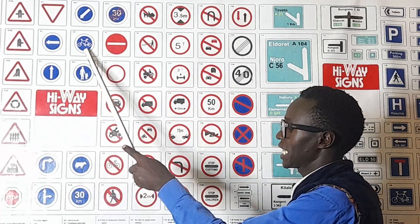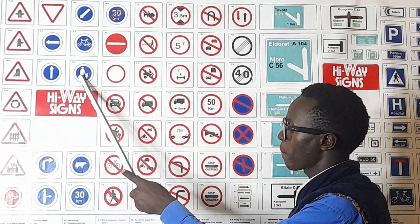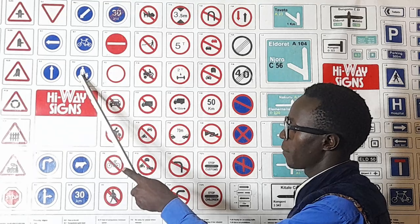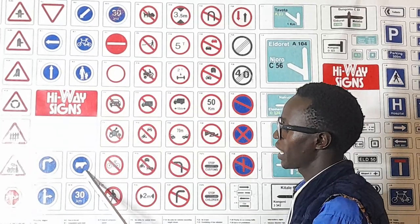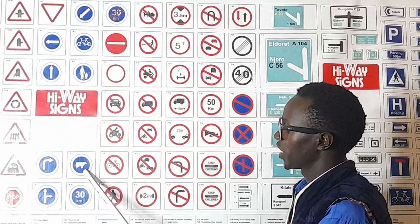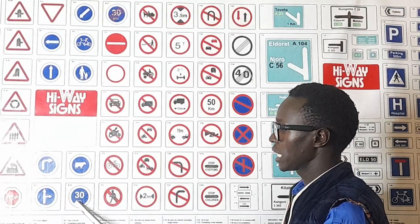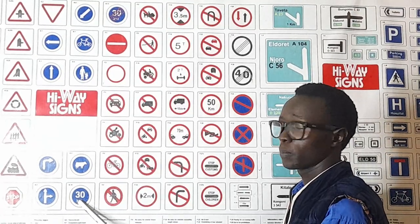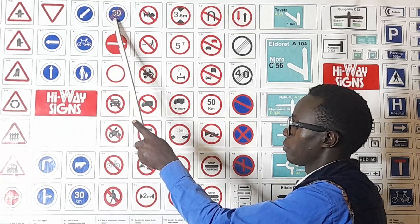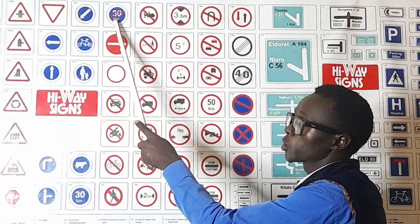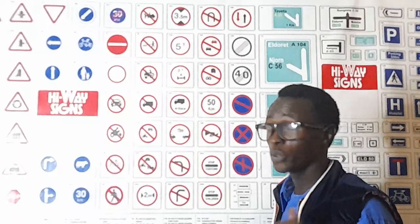Compulsory cycle track. Compulsory pedestrian footpath. Compulsory track for cattle. Compulsory minimum speed. End of minimum speed.